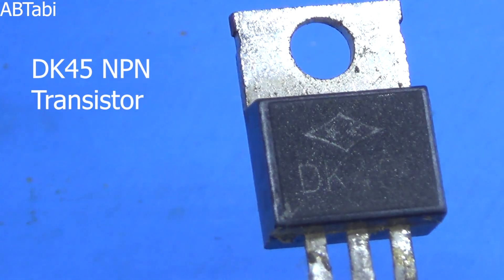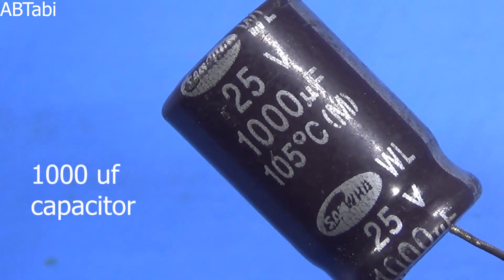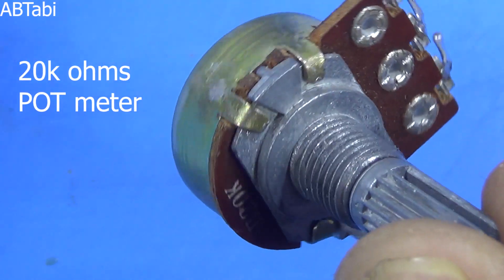DK45 NPN transistor - you can use any other NPN power transistor, 1000uF capacitor, and 20k ohm potentiometer. You can also use 20k variable resistor.